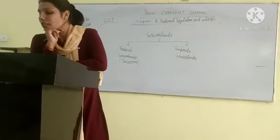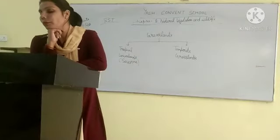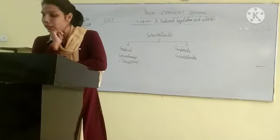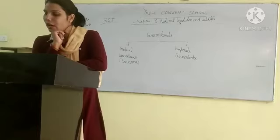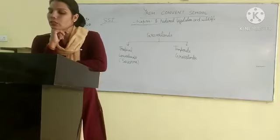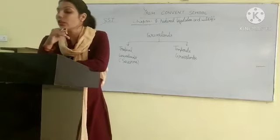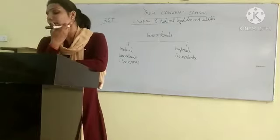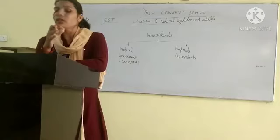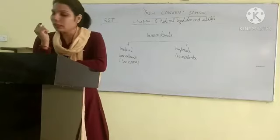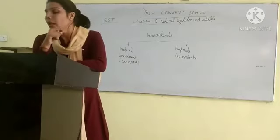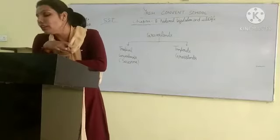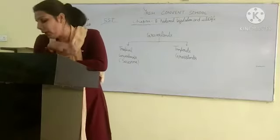This tall grass is about 2 meters to 4 meters in height. With scattered trees that grow here.